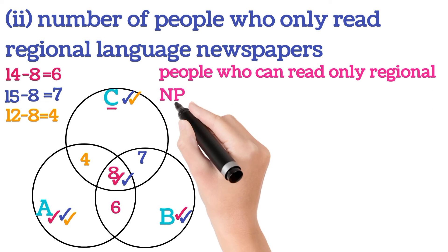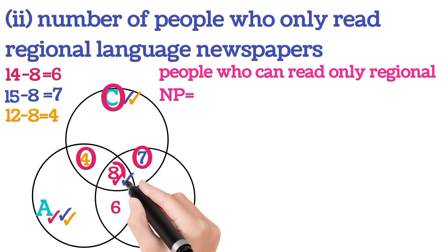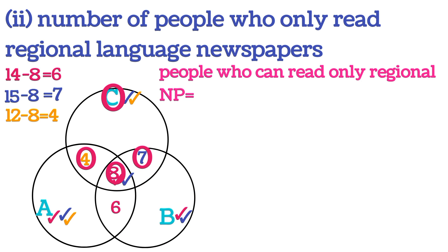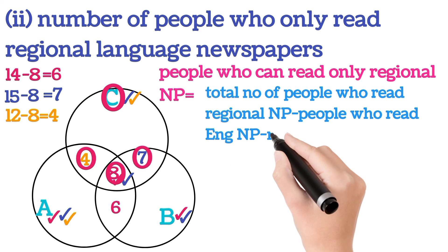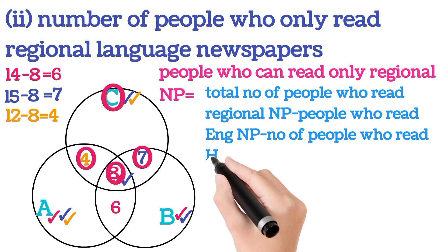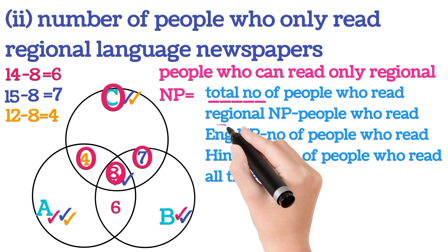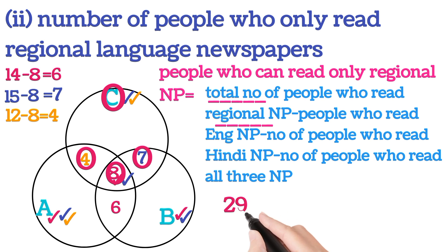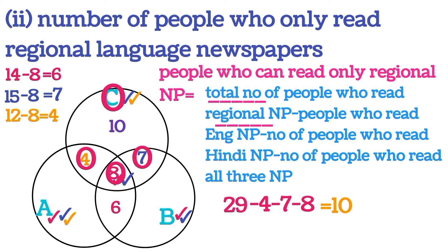Now we have to find people who read only regional newspaper. That will be the total number of people who read regional paper minus those who also read English minus those who also read Hindi minus those who read all three newspapers. Total people who read regional newspapers is 29, so: 29 − 4 − 7 − 8 = 10. So 10 people read only regional language newspapers. This is the answer for the question.